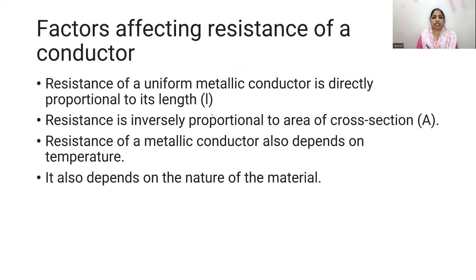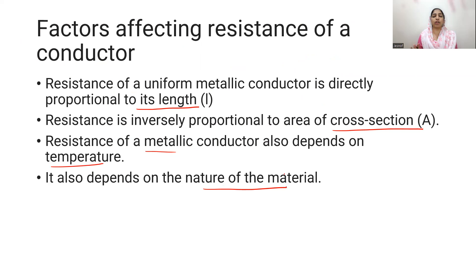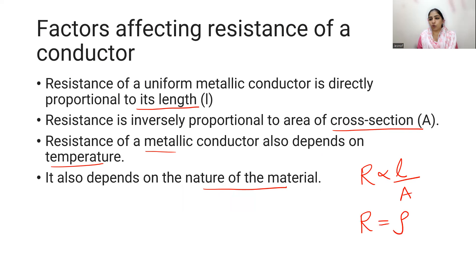Resistance of a metallic conductor is directly proportional to length, inversely proportional to area of cross-section, depends on the nature of the material, and also depends on temperature. You can write R proportional to L by A. The constant of proportionality is Rho — Rho L by A — where Rho depends on the nature of the material, and that is resistivity.